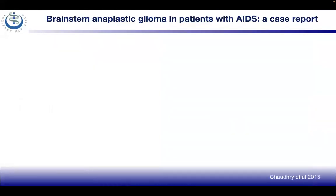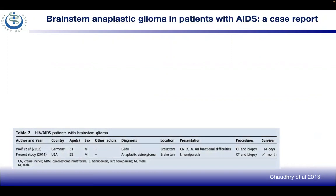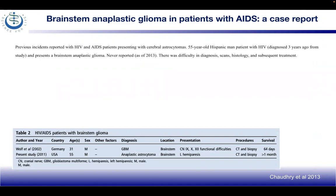Moving to brainstem anaplastic glioma: there are two case reports from Germany and the USA. CT and biopsy were performed, and survival was less than one month in the USA and 64 days in Germany, with the tumor located in the brainstem. Previous incidents of HIV and AIDS patients presenting with cerebral astrocytomas are reported. This specific case involved a 55-year-old Hispanic man with HIV diagnosed three years prior, presenting with a brainstem anaplastic glioma — never previously reported as of the 2013 study.